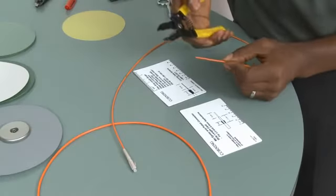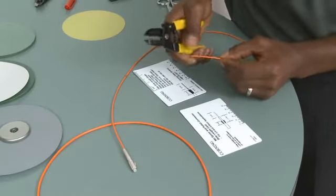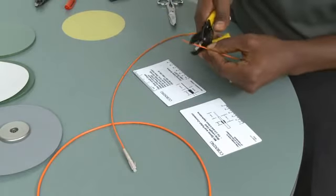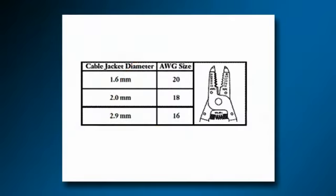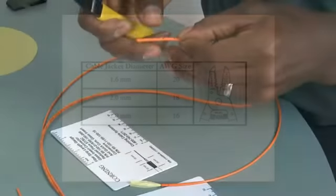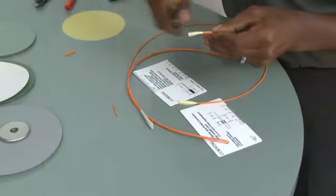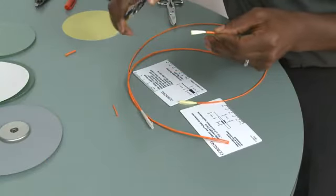Using a buffer stripping tool, remove the jacketing at the mark closest to the end of the jacket. For 1.6 millimeter, use the 20 gauge, and for the 2 millimeter, use the 18 gauge, and for the 2.9 millimeter, use the 16 gauge. And then remove the jacket with no sliding motion, you may damage the fiber on the inside.